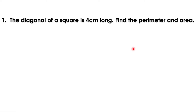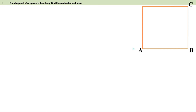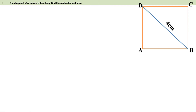First problem: the diagonal of a square is 4 cm long. Find the perimeter and area. Let us take a square ABCD. Given that the length of the diagonal is 4 cm. Now look at triangle ABD — this angle is a right angle, so it is a right angle triangle. These two sides are equal, therefore it is an isosceles triangle. ABD is an isosceles right angle triangle with the right angle at A and the other two angles at 45°. We know the ratio of sides of a 45-45-90 triangle is 1:1:√2. Therefore AB:AD:BD = 1:1:√2.